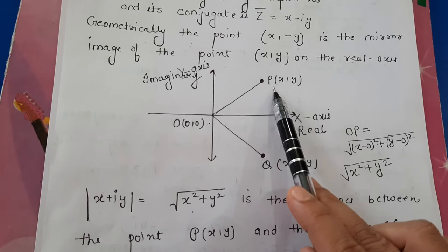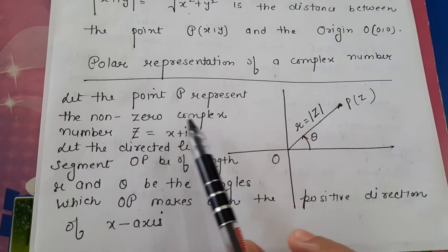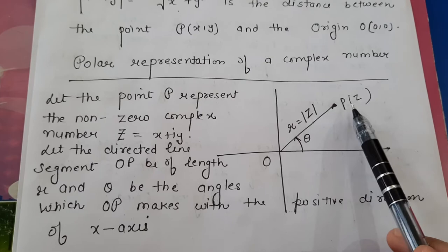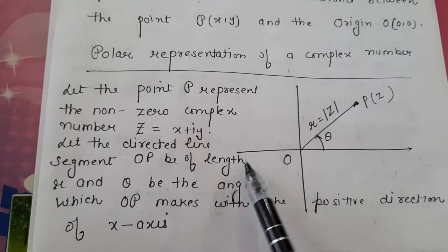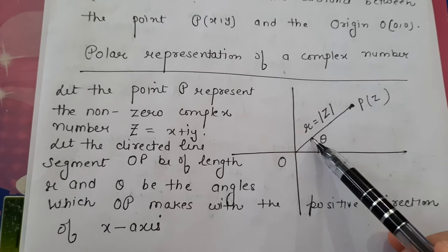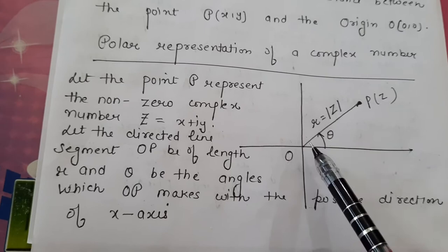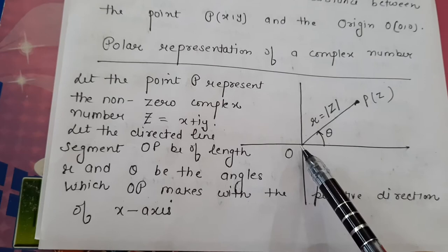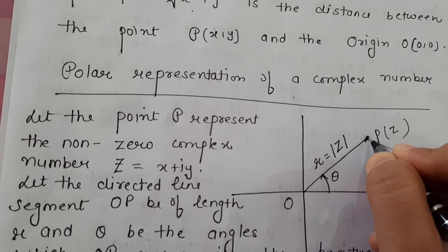The next important topic is the polar representation of any complex number. Let the point P represent any non-zero complex number z = x + iota y. The directed line OP has length r and makes an angle θ with the positive direction of the x-axis. Here r is the modulus — the distance of the complex number from the origin — and θ is the angle which the line OP makes with the positive x-axis direction.